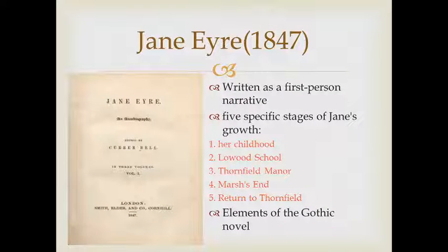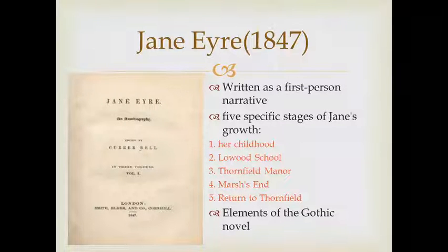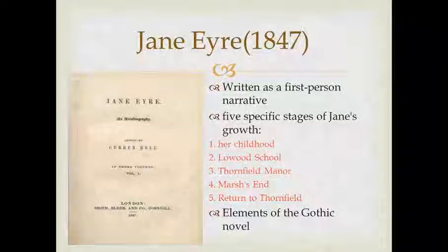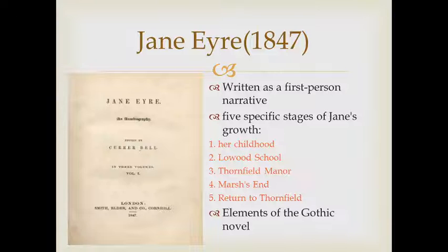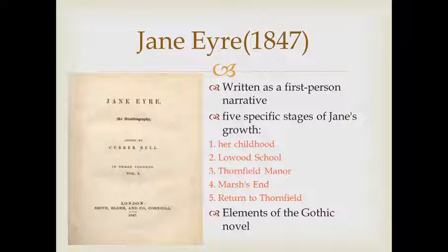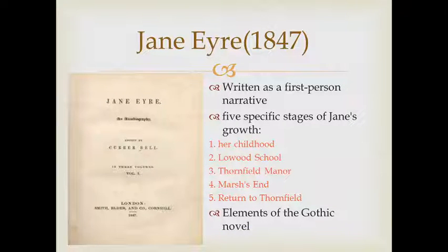Jane Eyre was published in 1847 and written as a first-person narrative. Brontë describes five specific stages of Jane's growth: her childhood among oppressive relatives, her time as a student at Lowood School, her months as a governess at Thornfield Manor, her time with her cousins at Marsh End, and finally her return to Thornfield Manor and marriage to Mr. Rochester. The novel follows the plain but intelligent Jane Eyre through her individual development from traumatic childhood onwards.